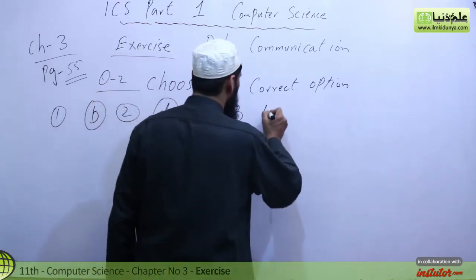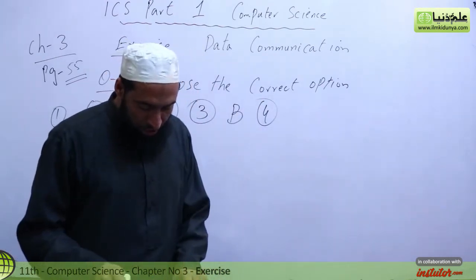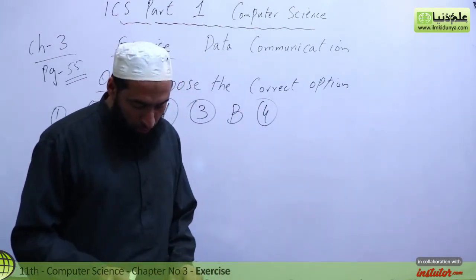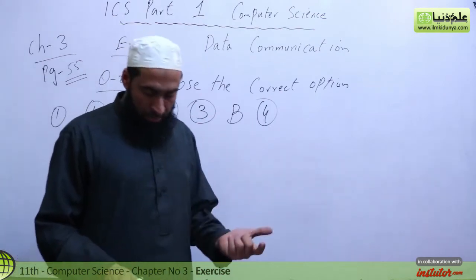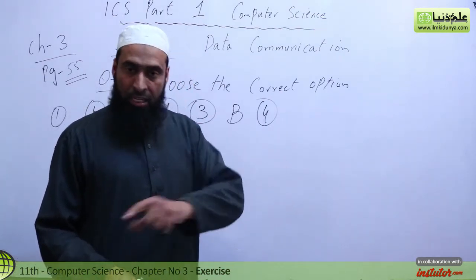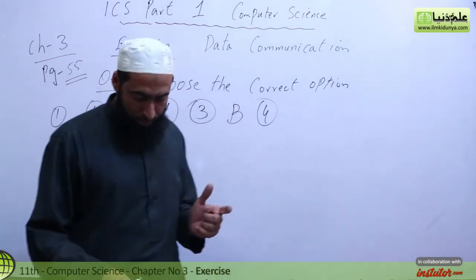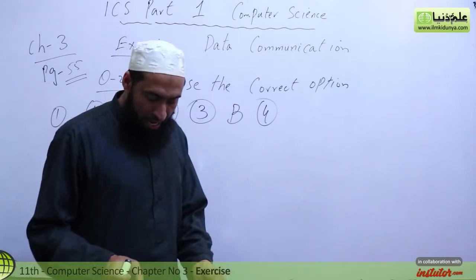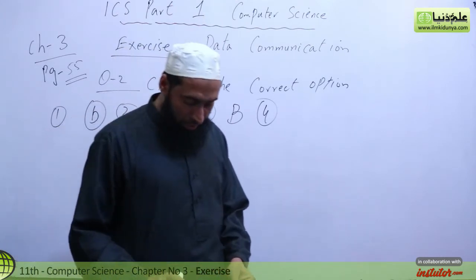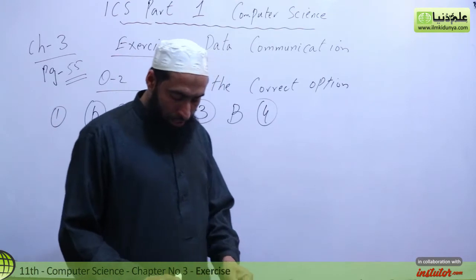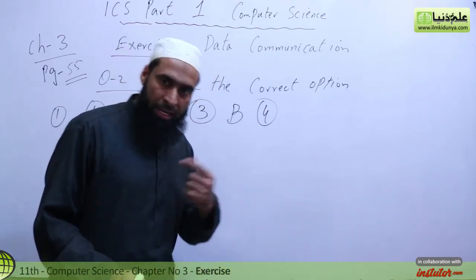Number 4: Communication between a computer and a keyboard involves which mode? The options are simplex, half duplex, full duplex, or automatic. The answer is A — simplex form. A keyboard-to-computer communication is one-directional, i.e., simplex.